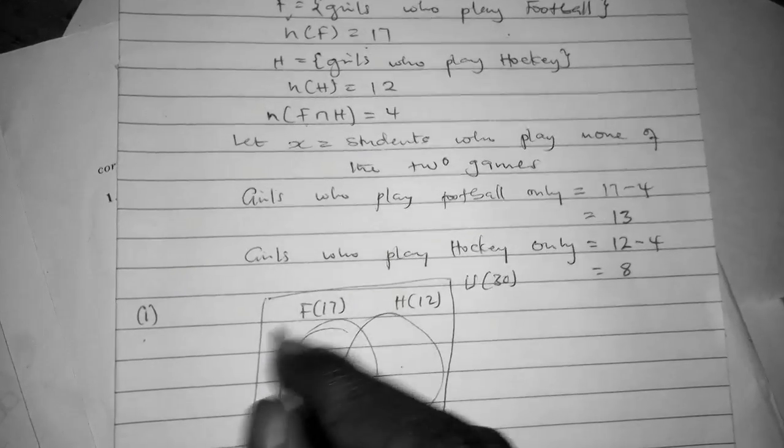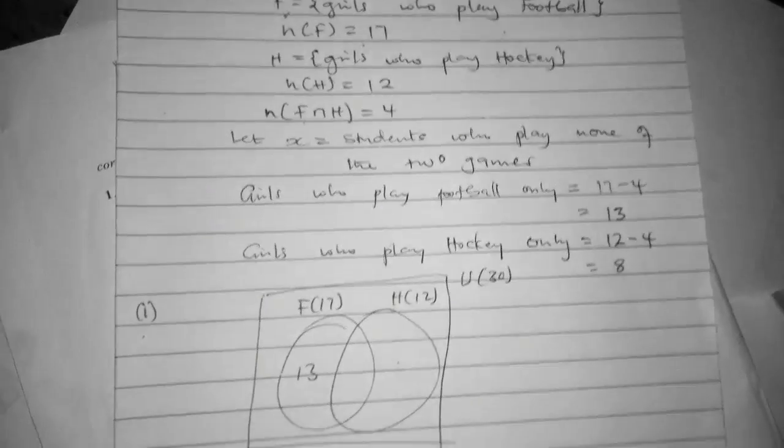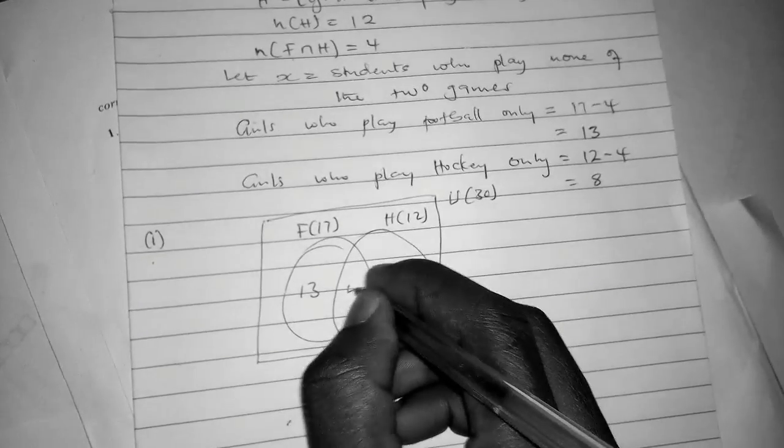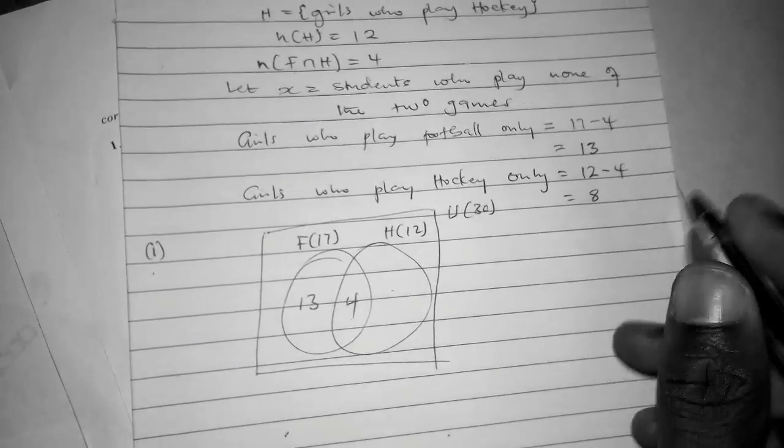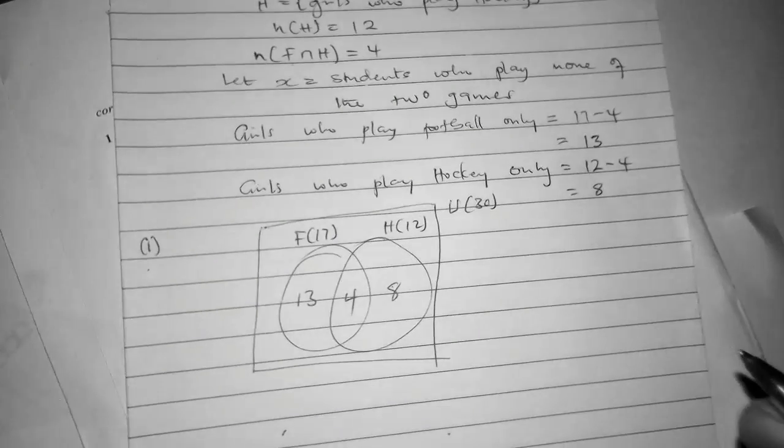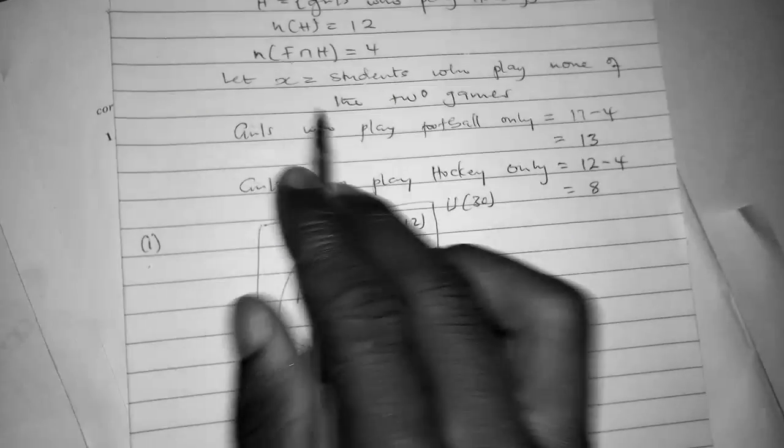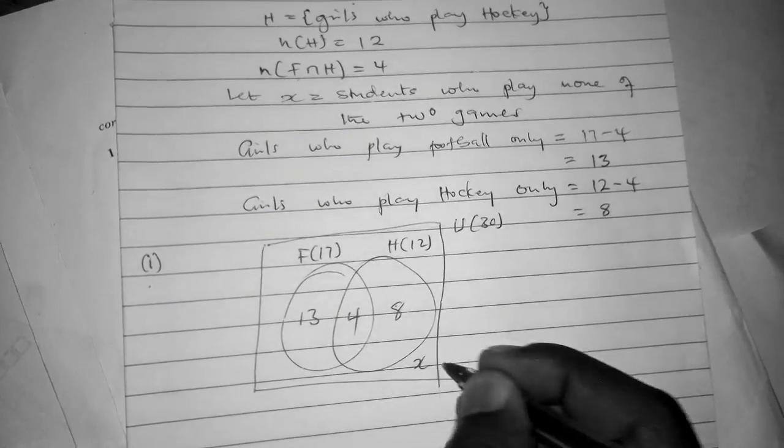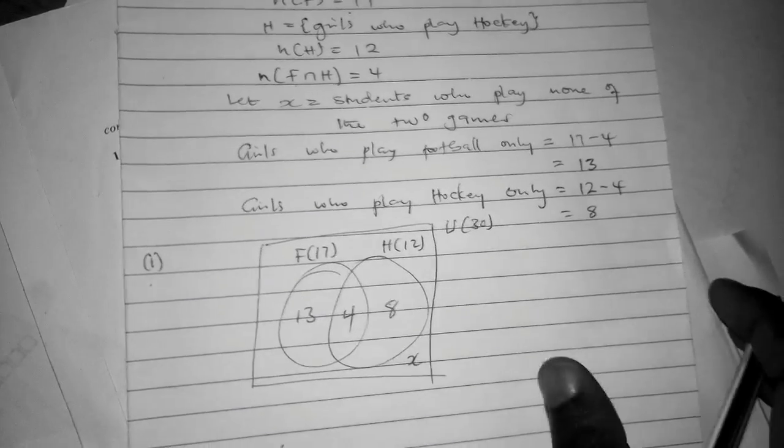Those who played only football is 13, those who took part in both games is 4, and we have 8 for hockey only. Let S = students who played none of the games, so S will be here. That's the Venn diagram.